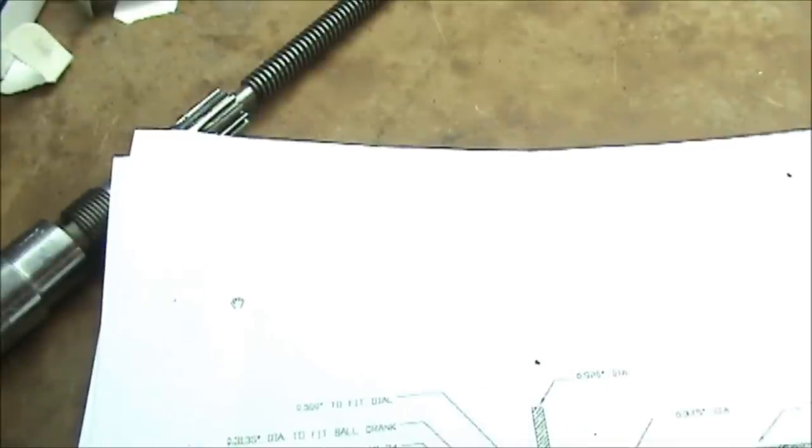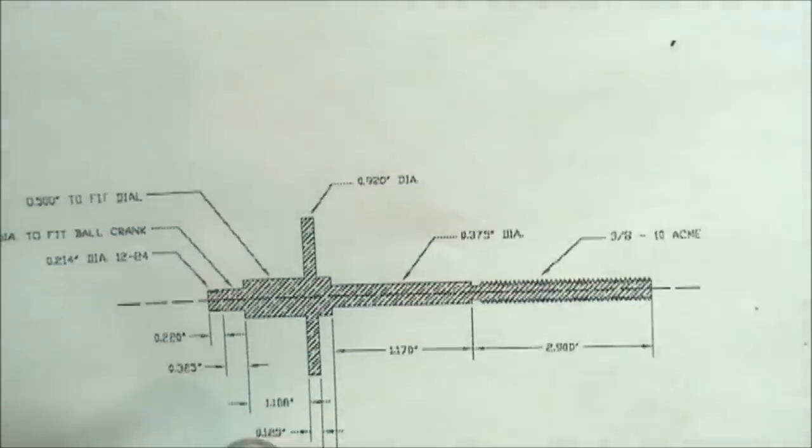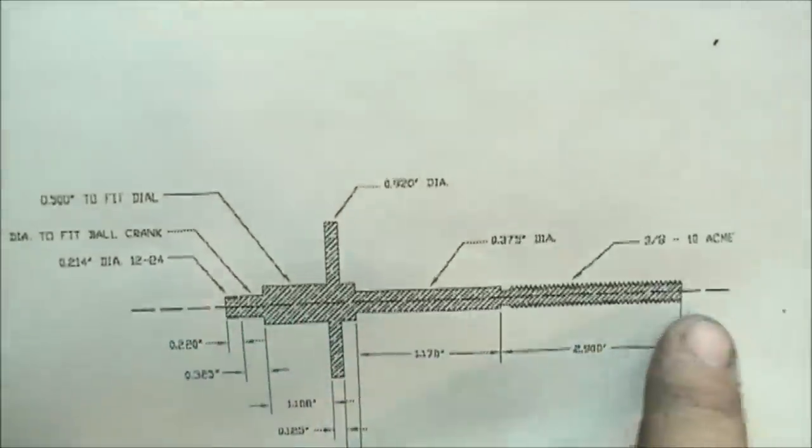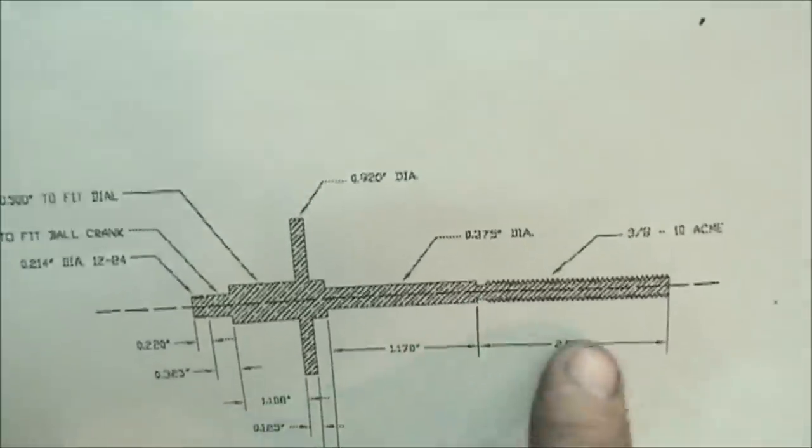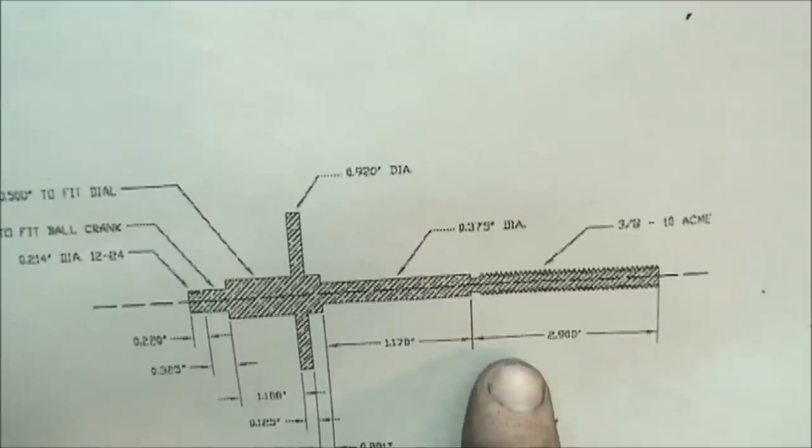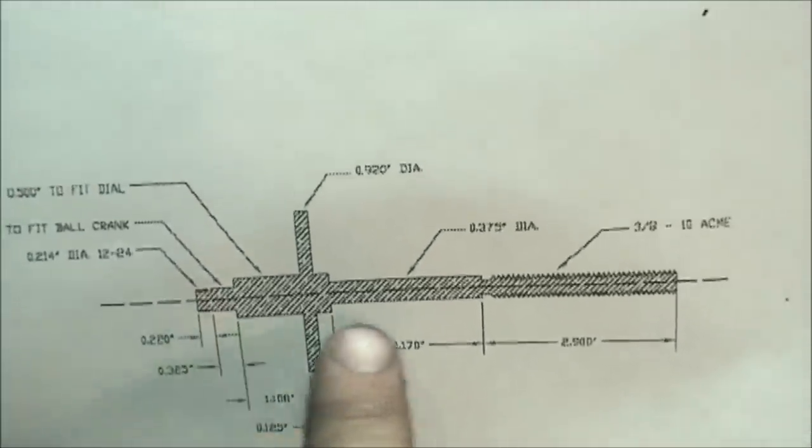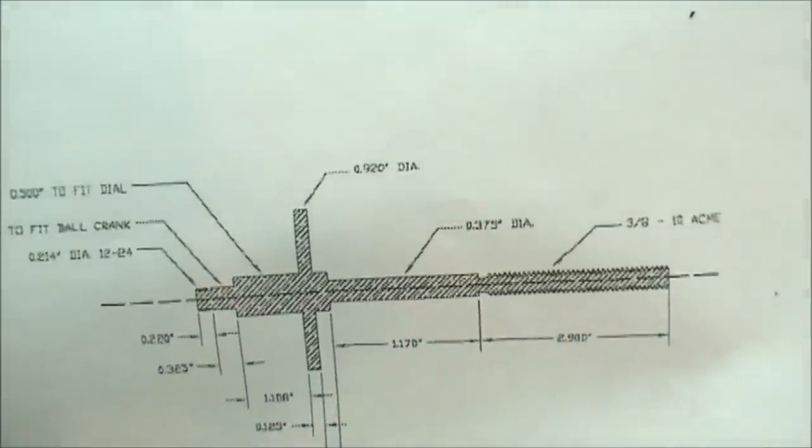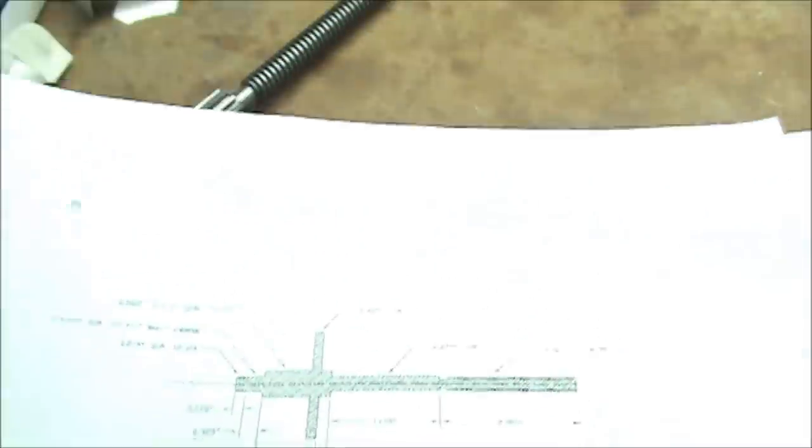So now, what I'm going to have to do is I'll rough out a piece this long and then we'll measure our diameter. And I'm going to use a half-inch piece of cold-rolled steel for this, 12L14. Let's make this piece.